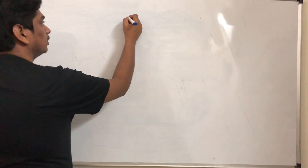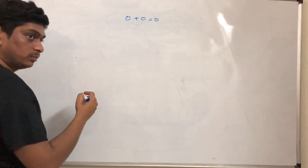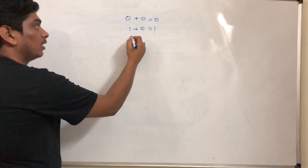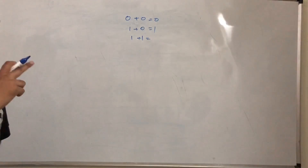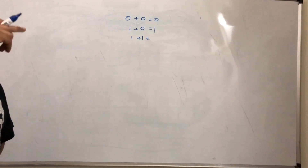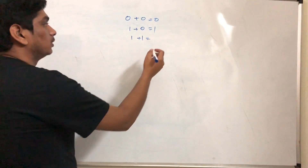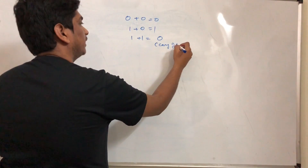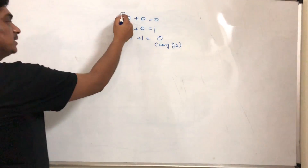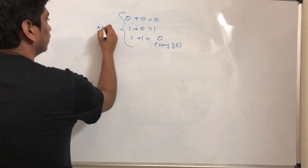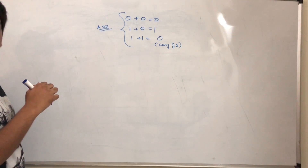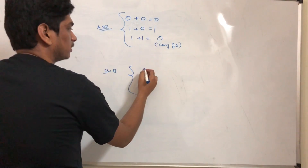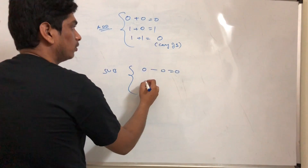The basic rules of binary addition are: 0 plus 0 is 0, 1 plus 0 is 1, and 1 plus 1 is 0 with a carry of 1. Those are the rules of addition for binary numbers. Coming to subtraction, it's similar: 0 minus 0 is 0, 1 minus 0 is 1.